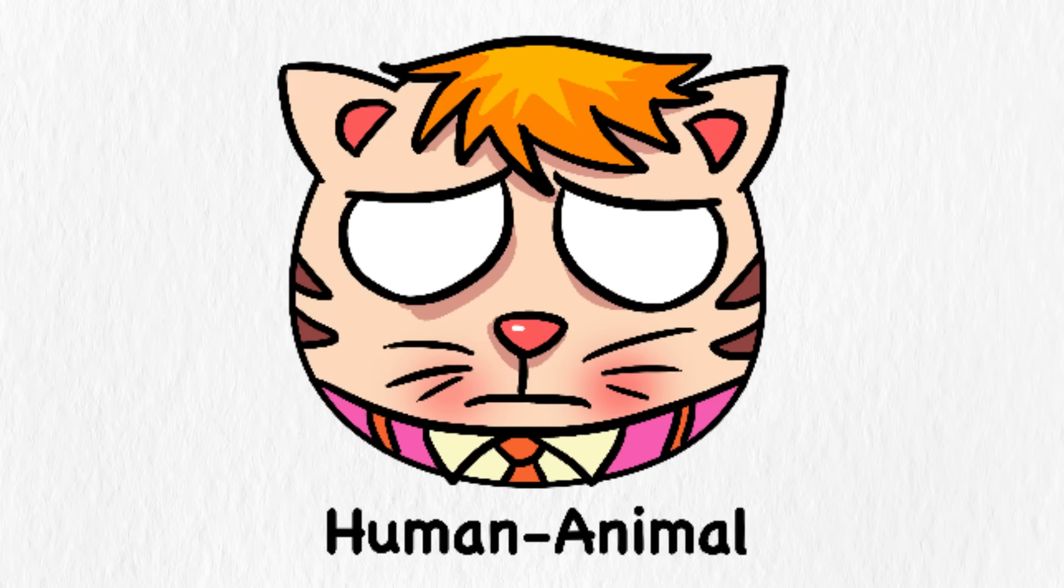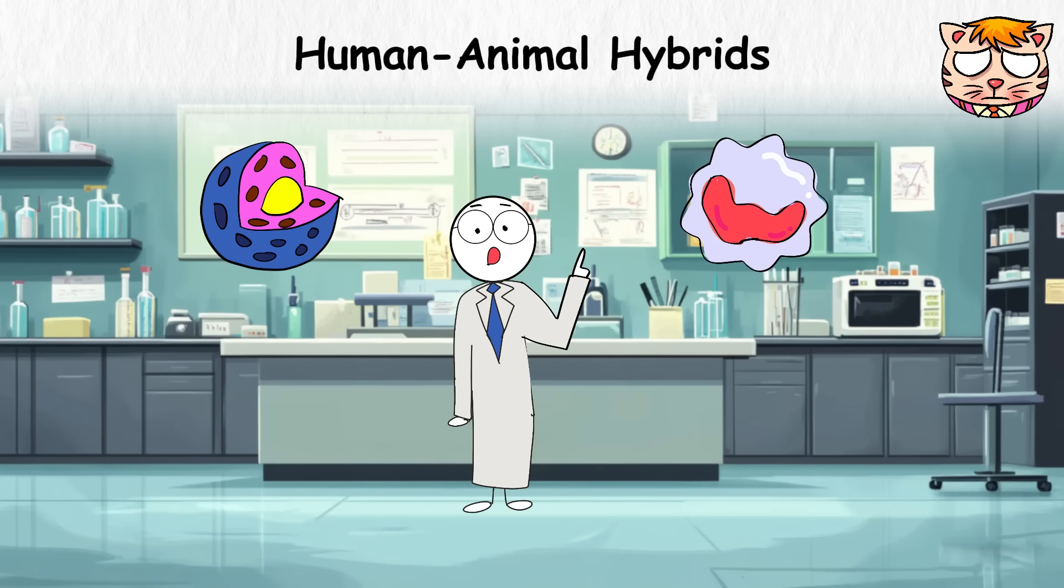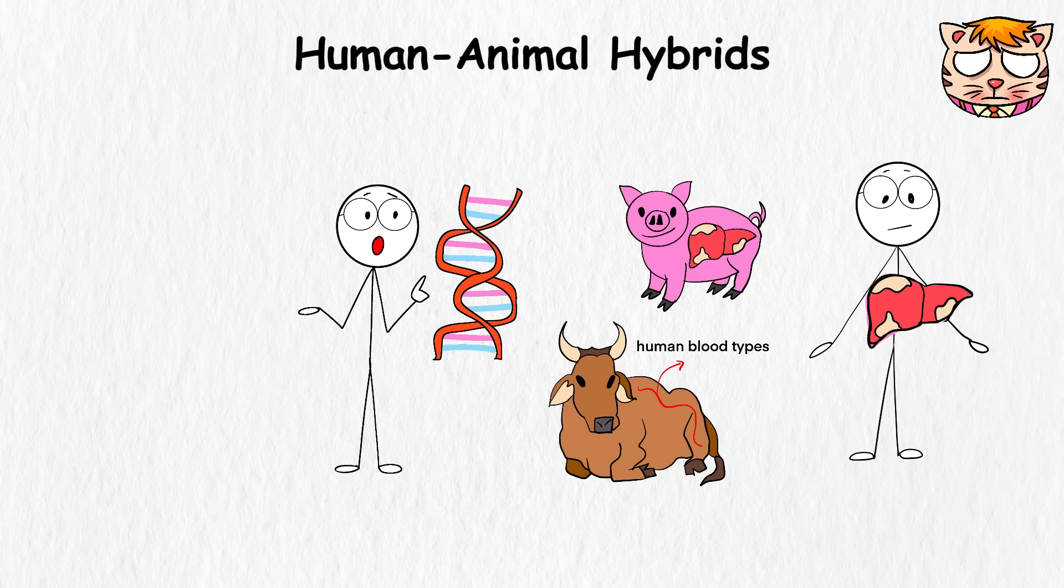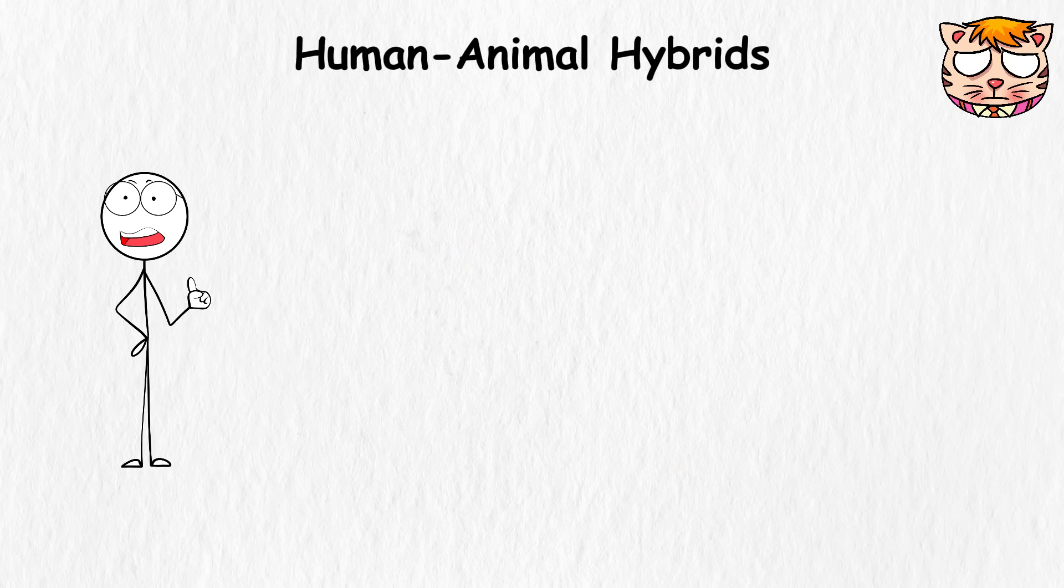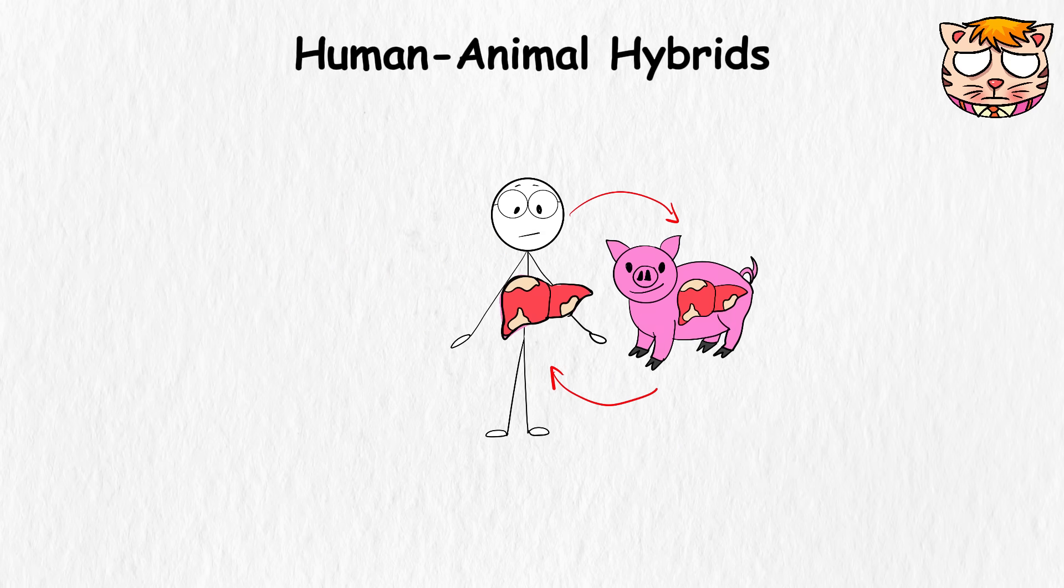For decades, researchers have dabbled with the idea of mixing human cells with animal ones, mainly in the name of medicine. Imagine if we could grow a pig liver compatible for transplant into humans, or think of cows with human blood types to study diseases. It sounds like something out of a mad scientist's journal, but the truth is, the real focus has been on life-saving, or at least life-improving, experiments. However, ethical alarm bells start ringing whenever you mention blending humans and animals.